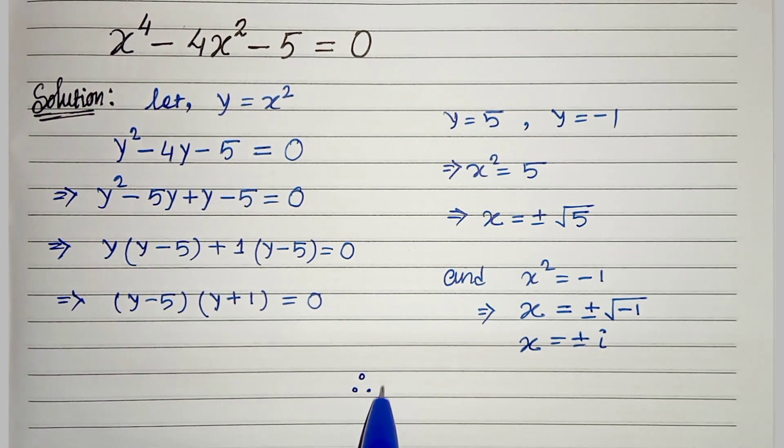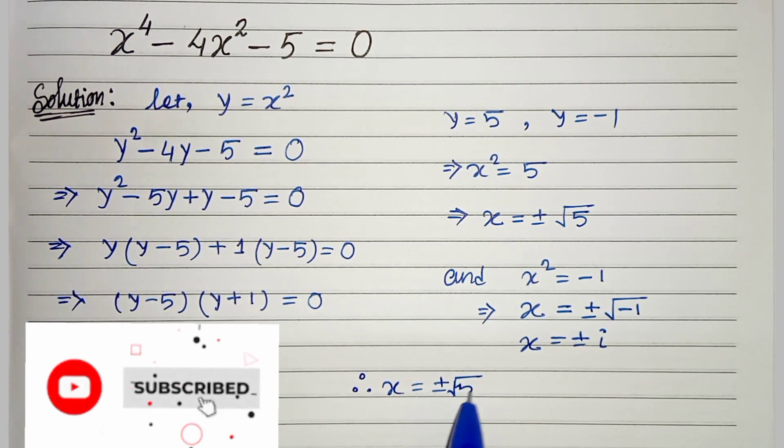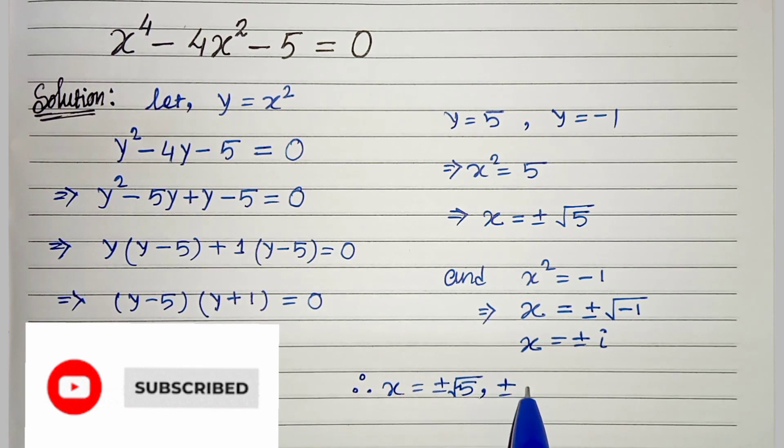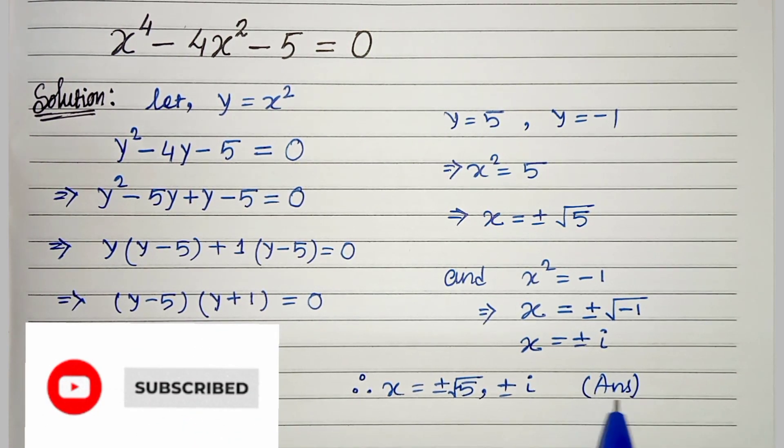So our solutions are x equals plus minus root 5 and plus minus i. Thanks for watching.